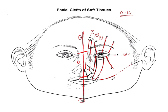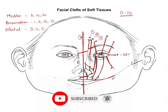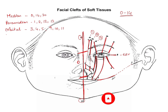Based on these types, the four groups are: median clefts including types 0, 14, and 30; paramedian clefts immediately adjacent to the midline including types 1, 2, 12, and 13; orbital clefts including types 3, 4, 5 on the inferior aspect and types 9, 10, 11 on the superior aspect; and lateral clefts including types 6, 7, and 8.